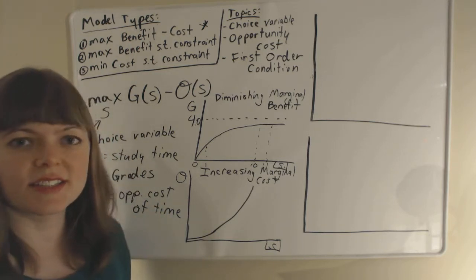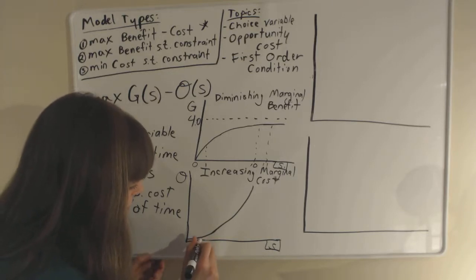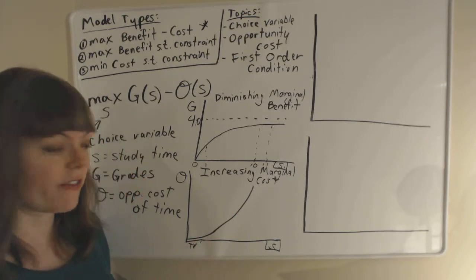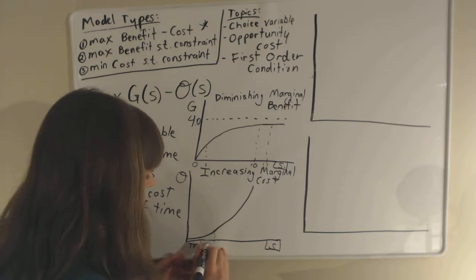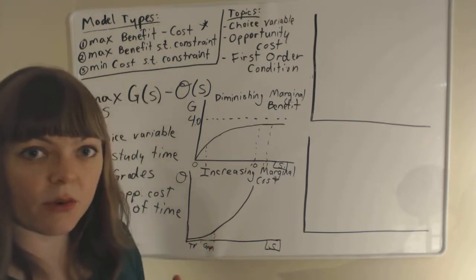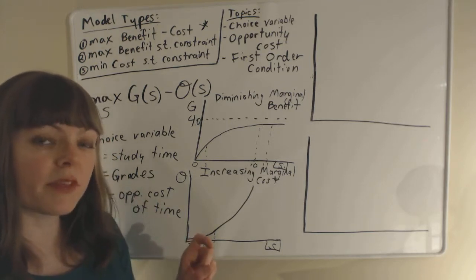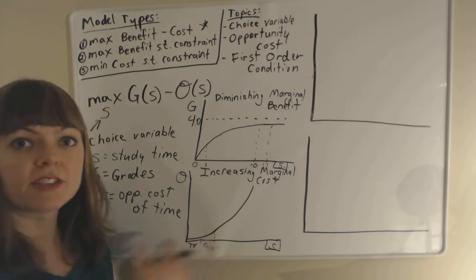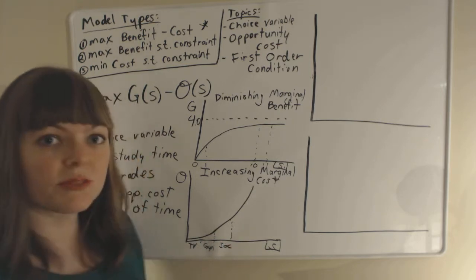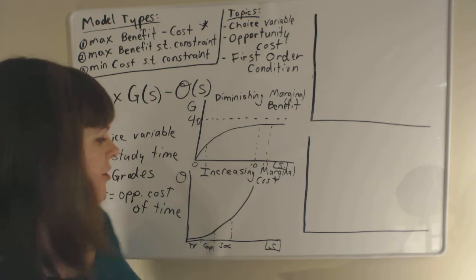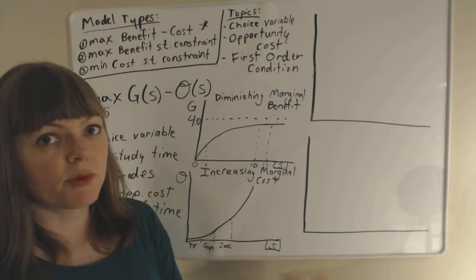Opportunity cost is measured by what you give up to spend that time studying. For the first hour, you give up TV time or internet surfing time. After you've studied a few hours, what do you give up next? It might be time at the gym. If you've already studied five or six hours, you've given up all your internet and TV time, so now you have to forgo going to the gym. The gym is more valuable than TV time, so you're giving up increasingly valuable time. After the gym, you might give up socializing, which is important for your mental and emotional health.